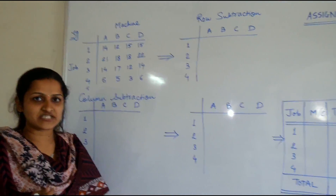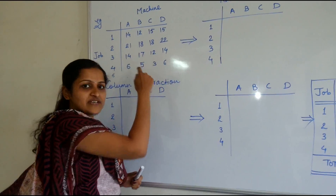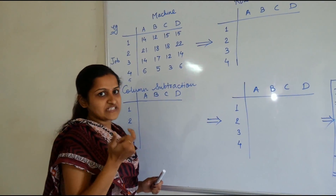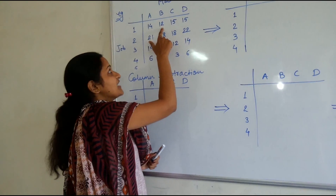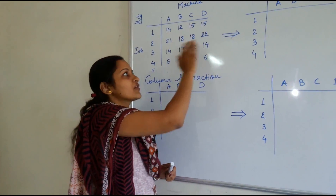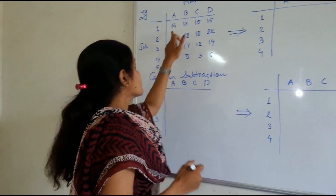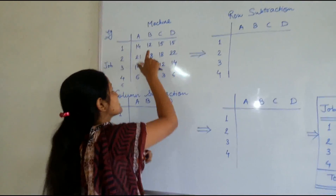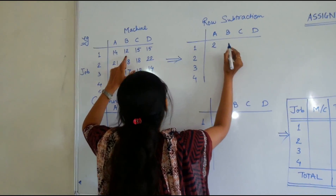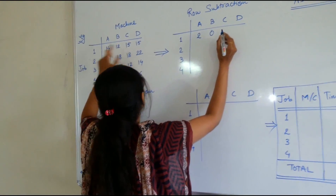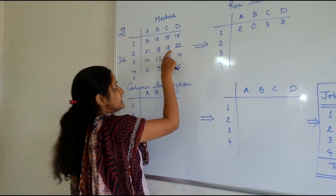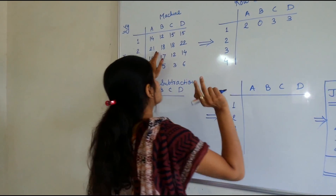The first step is row subtraction. In row subtraction you consider each and every row separately. Find the minimum or smallest number in that row and subtract it from all other numbers in that corresponding row. Perform the same operation for all rows. Consider the first row — the smallest number is 12. So: 14 minus 12 is 2, 12 minus 12 is 0, 15 minus 12 is 3, 14 minus 12 is 2. Now the second row — the smallest number is 18: 21 minus 18 is 3, 18 minus 18 is 0, 18 minus 18 is 0, and 22 minus 18 is 4.